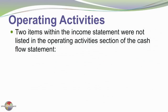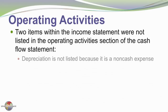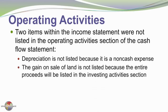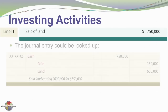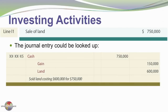Two items within the income statement were not shown in the direct cash flow from operations calculations. One was depreciation — it's a non-cash expense. Another is the gain on the sale of land, which is shown separately in investing activities. In the investing activities section, land was sold for $750,000. The journal entry would be: debit cash $750,000, credit land $600,000, credit gain $150,000. That $150,000 gain appeared in the income statement but not in operating activities. The cash generated from this transaction was $750,000 — the gain or loss is irrelevant — and that's what's shown in the investing activities section.